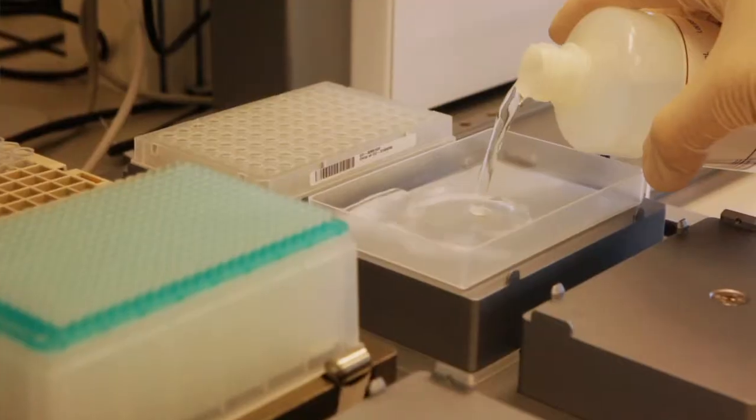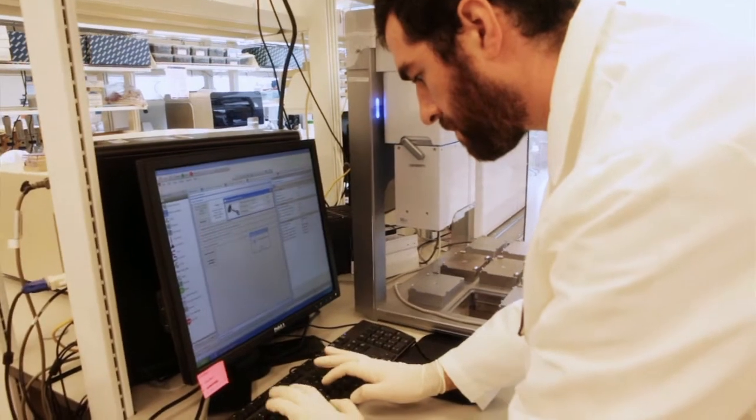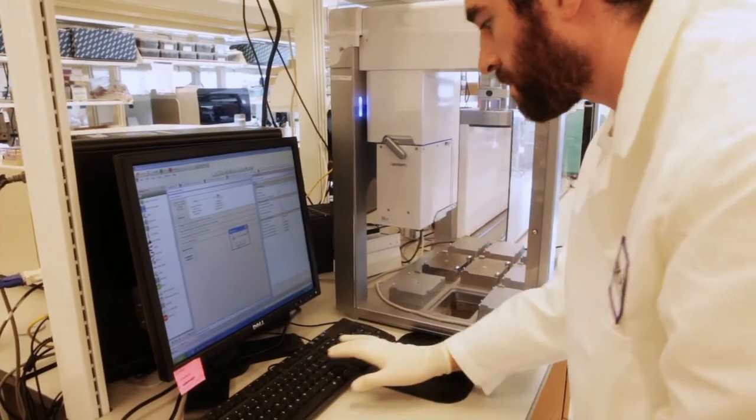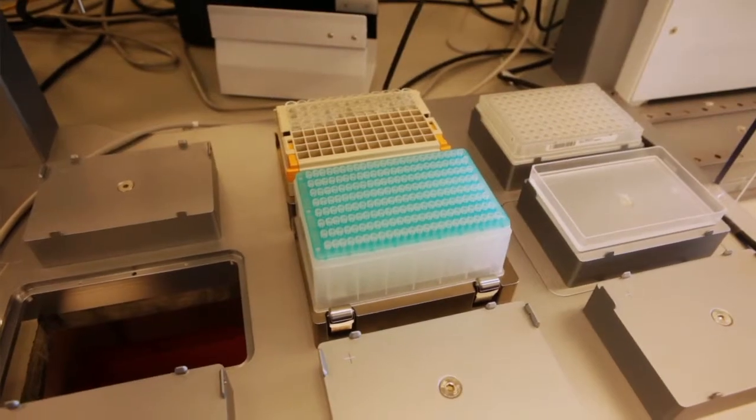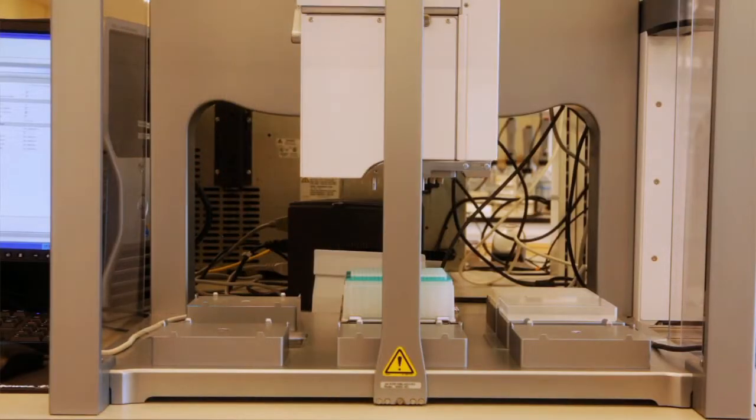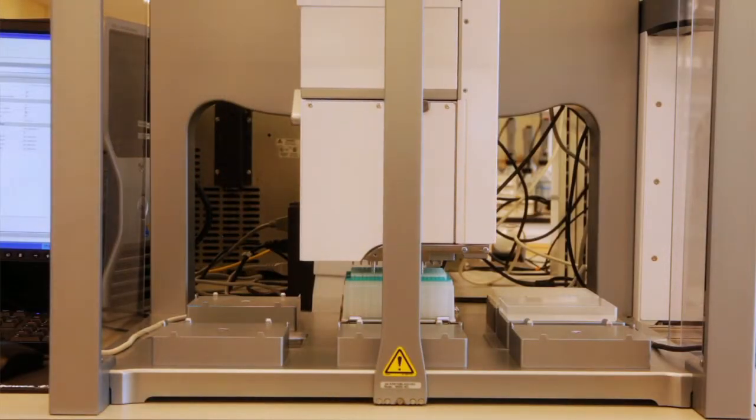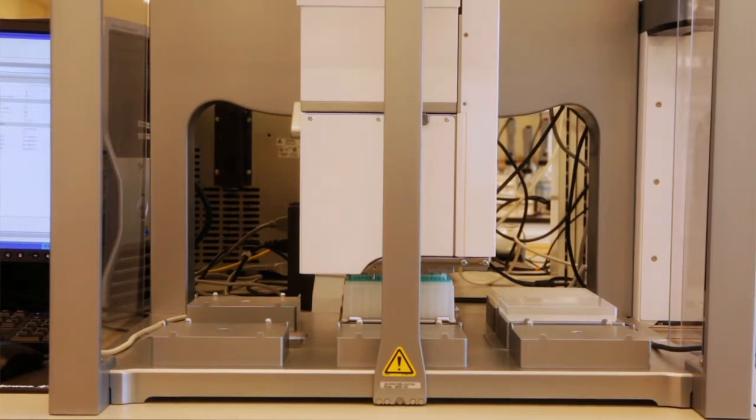The reason we have to normalize the samples is because many of our processes require pipetting a minimum of one microliter. And at very high concentrations, one microliter would use up a lot of DNA. So we have to have the samples diluted to a certain amount so that we can continue to do downstream processes without exhausting the sample's volume.